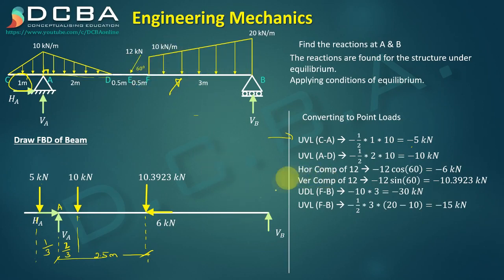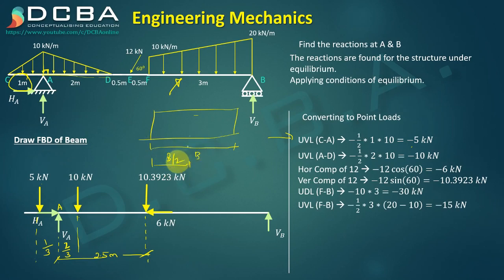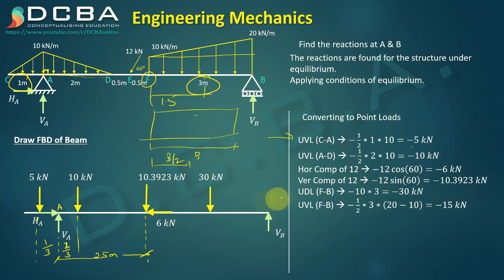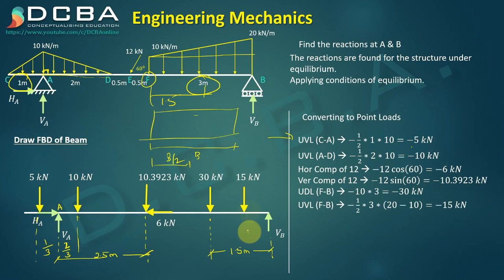The UDL of 30 kN acts at the centroid of the rectangle: 3/2 = 1.5 m from F. The UVL of 15 kN acts at 1 m from the right-angle end (base/3 = 3/3 = 1 m from the right-angle point), meaning it is at 2 m from F (or equivalently 3 + 2 = 5 m from A).